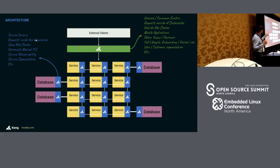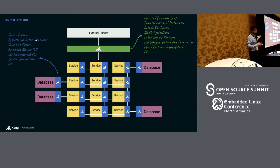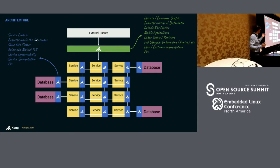The services are never connecting to each other directly, but are going to be talking to this sidecar proxy that transparently, without changing any line of code on the actual service, will be able to implement those features. When it comes to services, it's not just an API — it can be really anything. It can be a database, a Kafka queue, Redis, anything that runs on a network that we want to consume.